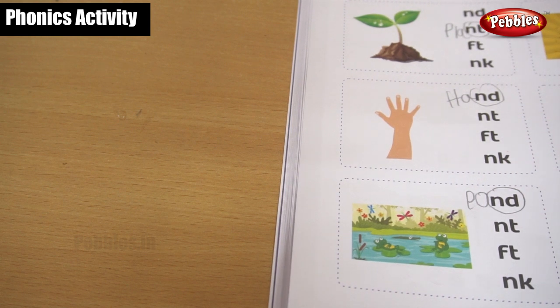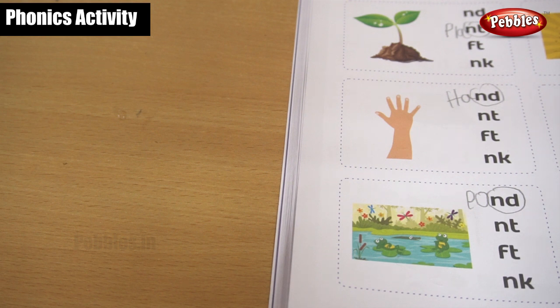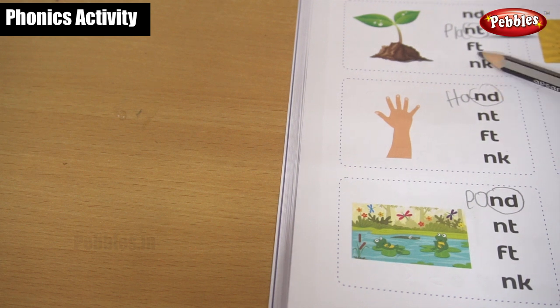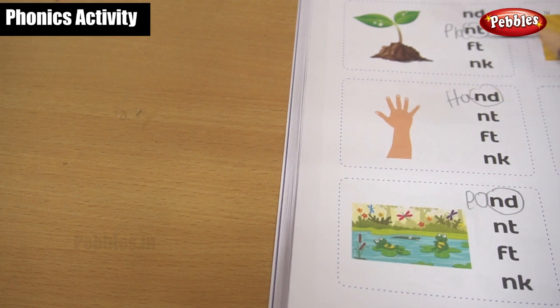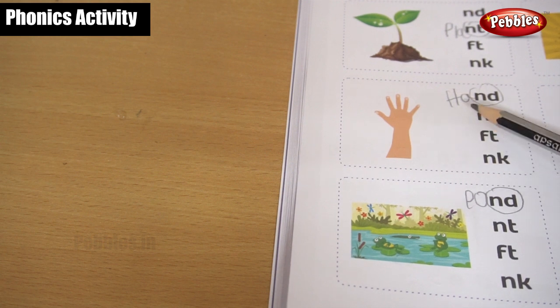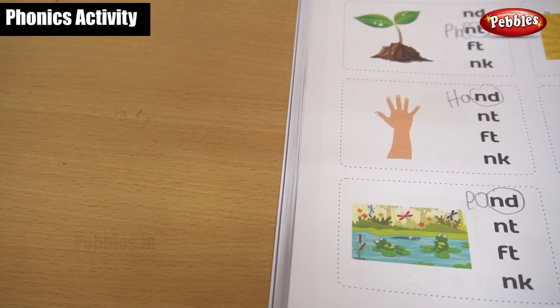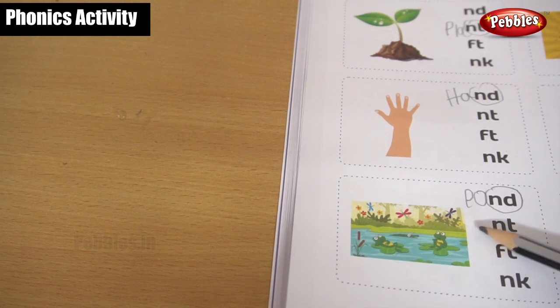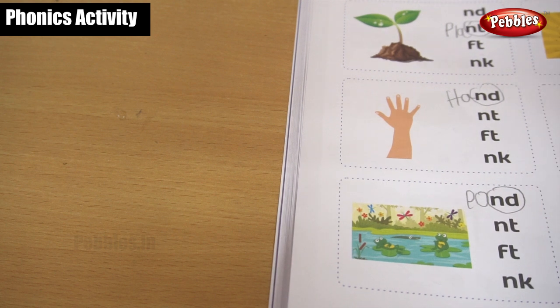Okay, did you understand? Okay, so far we have seen about the ending word of N-D and N-T. For a bend, we said B-E-N-D, bend. For a plant, we said P-L-A-N-T, plant. For a hand, we said H-A-N-D, hand. For pond, we said P-O-N-D, pond. Okay, children.